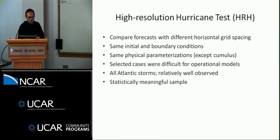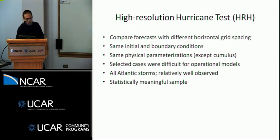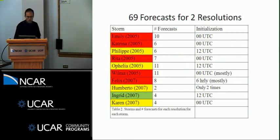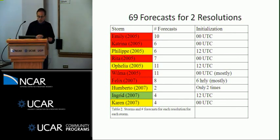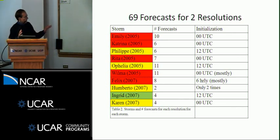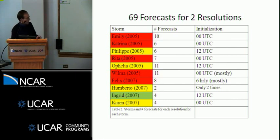The cases were selected by the hurricane center forecasters as difficult cases from 2005 and 2007. They're all Atlantic storms. We think we have a statistically meaningful sample — not large by operational standards, but large by research standards. There are 69 forecasts. The red indicates storms that achieved Category 5, but they were actually simulated throughout their life cycle, so even the strong storms had weak phases. Emily, Ophelia, and Wilma have more forecasts than any other storm, and there are some really tricky aspects to these.